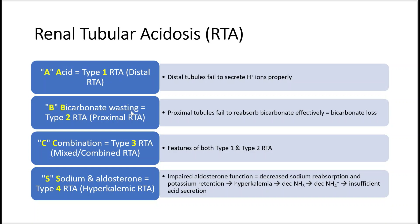B stands for bicarbonate wasting, and that's type 2 RTA. That's when the proximal tubules fail to reabsorb bicarb effectively, and so you have a net bicarb loss in the body. Since bicarb is alkalotic, you're losing that, so your body becomes acidotic.